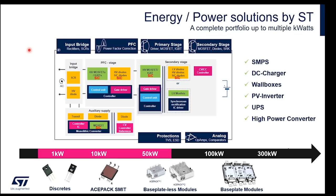Here we see a typical block diagram of an energy or power solution — essentially a power supply. From input to output, you can see the input bridge with rectification diodes, an SCR for inrush limitation, then the PFC stage with MOSFETs, transistors, or IGBTs depending on power range. We have high-voltage diodes — potentially silicon carbide diodes — the PFC controller, and the associated gate driver. The primary stage has transistors and a control unit; on the secondary side there are Schottky diodes, low-voltage diodes, or even high-voltage SiC diodes. For high efficiency in the low-voltage range, synchronous rectification using the SRK series and F7 low-voltage MOSFETs is also an option.